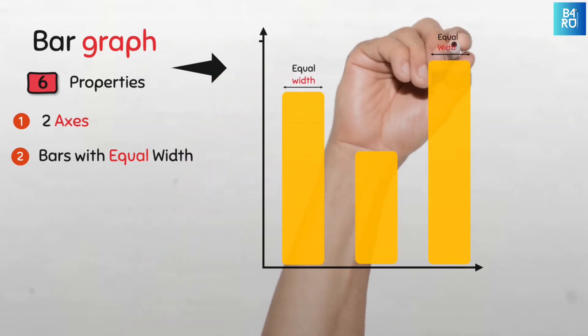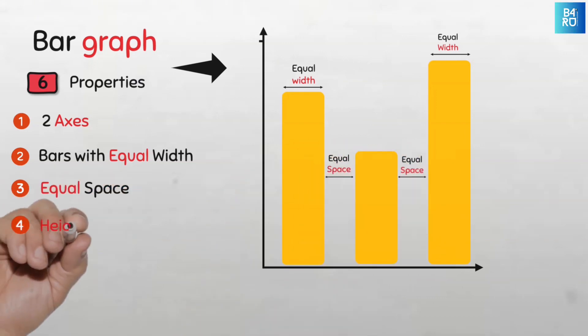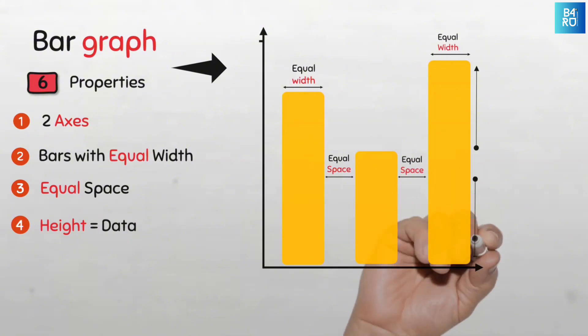Number three: all bars should have equal space between them. Number four: the height of the rectangular bar should be equivalent to the data it represents.